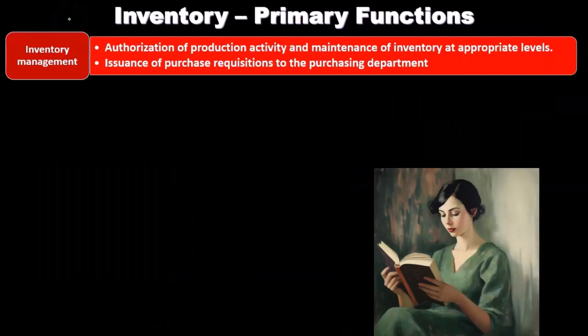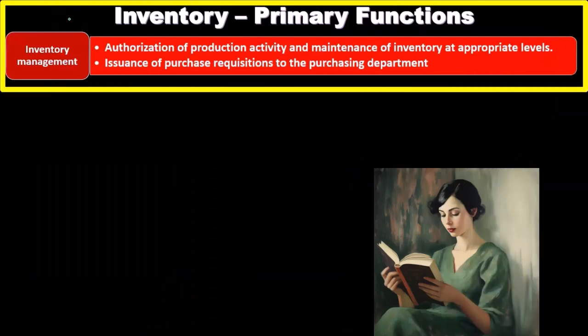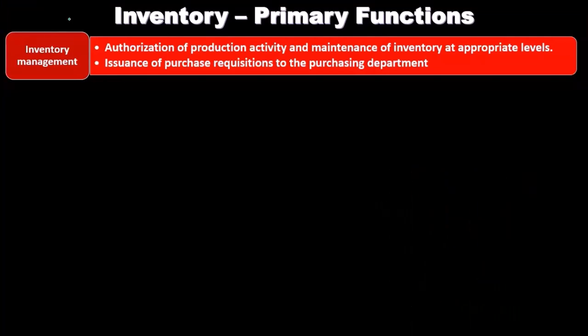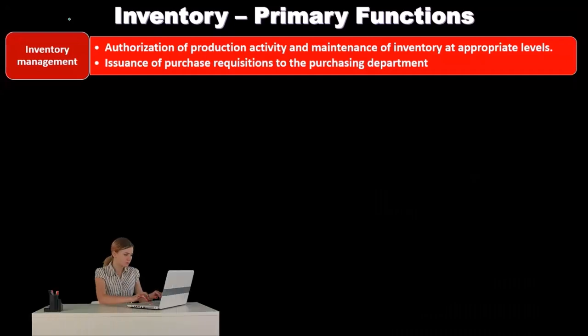We're going to take a look at the primary functions related to inventory. First, we have inventory management. The primary functions of inventory management are: authorization of production activity, maintenance of inventory at appropriate levels, and issuance of purchase requisitions to the purchasing department.